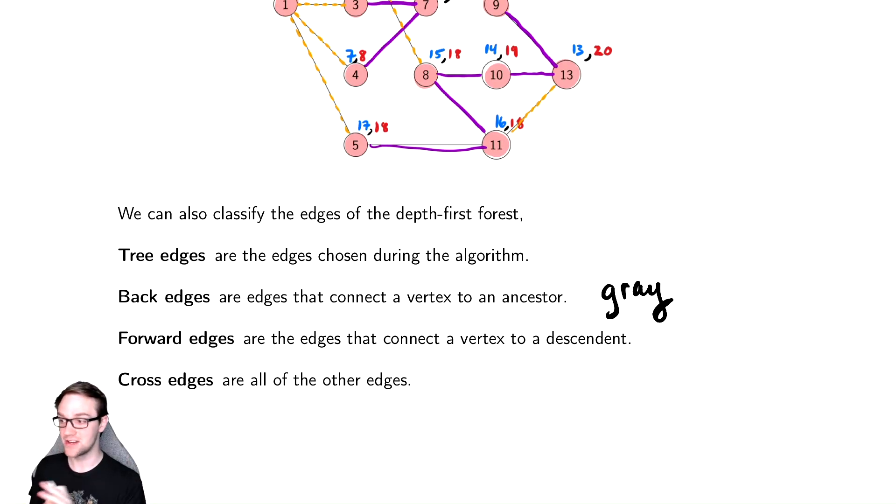A cross edge are the other edges that cut across the tree. You can determine if something is a descendant by using the discovery and finishing times. So there are forward edges and cross edges. They're really the same thing.